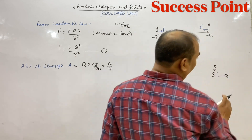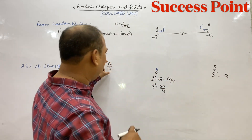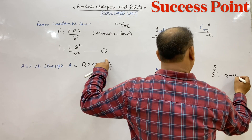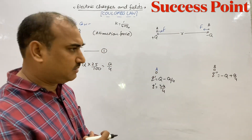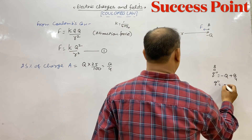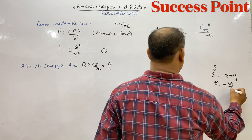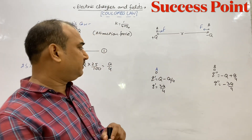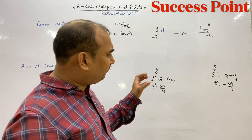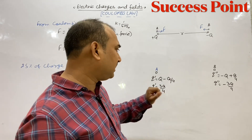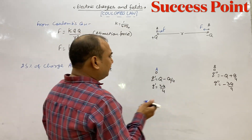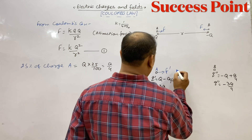B पर पहले −Q था और उसमें Q/4 add हो गया क्योंकि यह plus का charge है। तो B पर final charge = −Q + Q/4 = −3Q/4 हो जाएगा। दोनों charges positive और negative हैं, इसलिए इनके बीच अभी भी attraction force होगा।